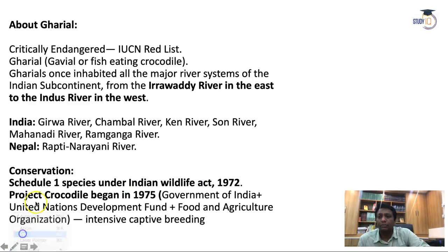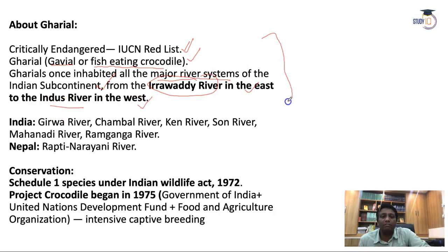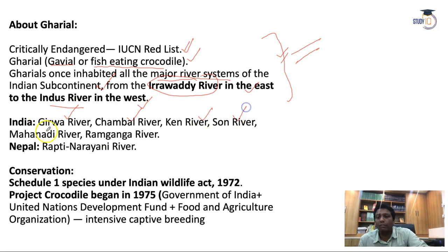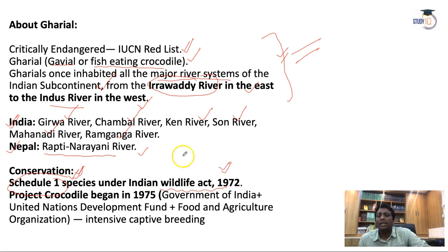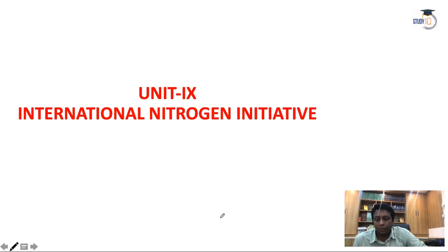Gharial is critically endangered according to the IUCN Red List. Also called the fish-eating crocodile, gharial once inhabited all major river systems of the Indian subcontinent — from the Irrawaddy river in the east to the Indus river in the west. In India, gharial is found in the Girwa, Chambal, Ken, Son, Mahanadi, and Ramganga rivers. In Nepal, it is found in the Rapti and Narayani rivers. Gharial is listed in Schedule I under the Wildlife Protection Act 1972. Project Crocodile was introduced in India in 1975 with the effort of the Government of India, UNDP, and FAO, especially for captive breeding of gharial.